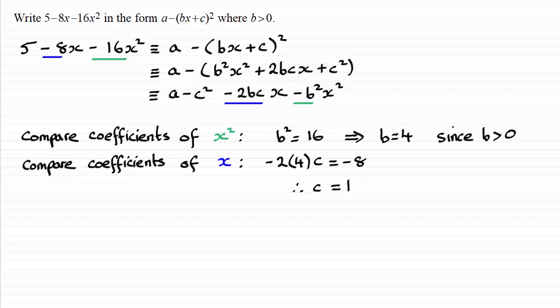Next I can compare the constants, and I can see that from the constants we've got 5 here, and we've got a minus c squared must match up with the 5. So if I write that in, we've got a minus c squared (c we've seen is 1, so it's minus 1 squared) equals the 5 up here. So we've got a minus 1 equals 5, so adding 1 to both sides clearly gives us a equals 6.